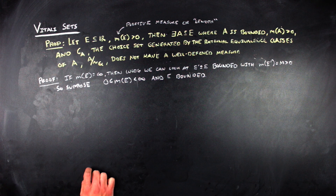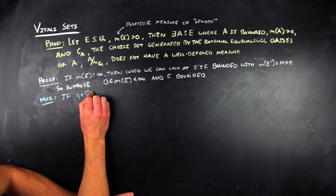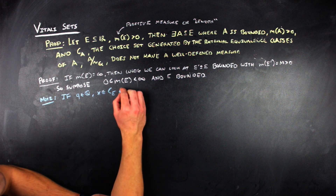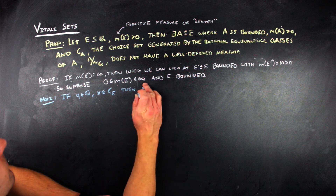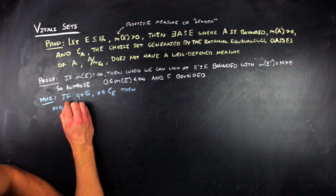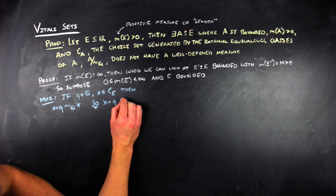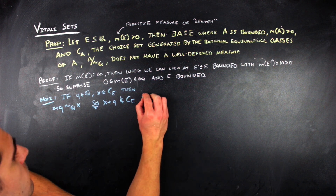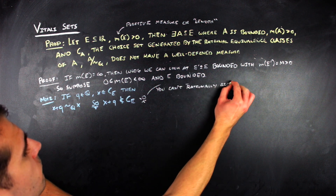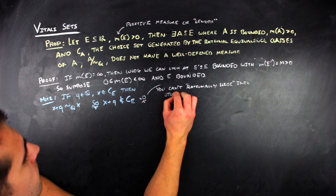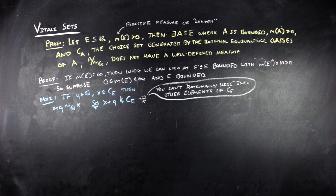The first thing to notice is that if you take a rational number and an element x of your choice set, then x and x plus that rational number are rationally equivalent. Since the choice set contains only one representative per equivalence class, x plus that rational number is not in the choice set. In a physical sense: if you slide an element of your choice set along the number line by a rational amount, you will never land on another element of the choice set.